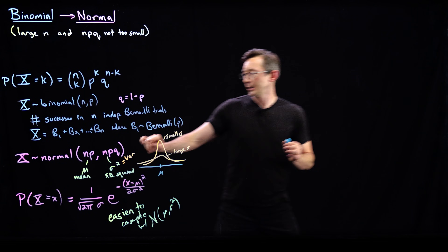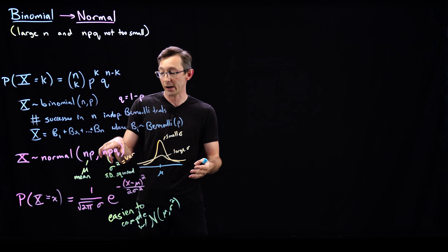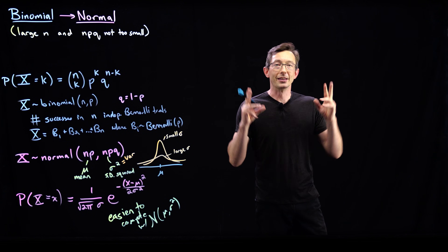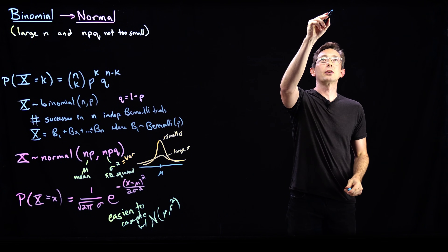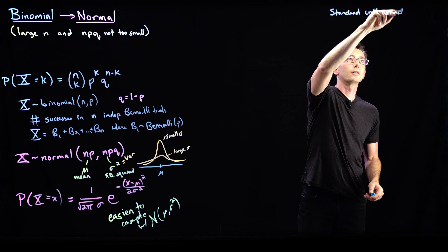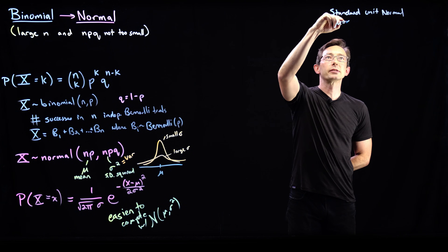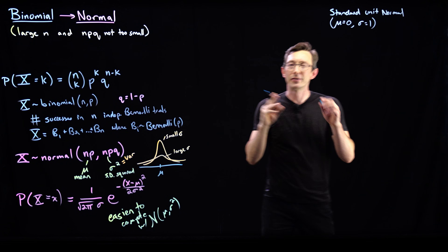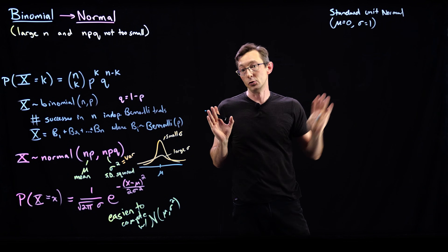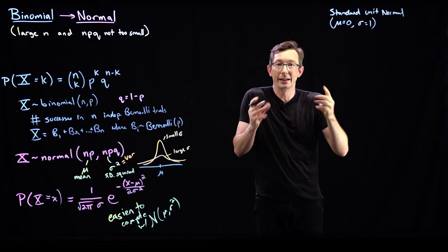This normal distribution is parametrized by two things: the mean mu and the standard deviation squared, sigma squared. I want to show you what this normal distribution looks like in the standard unit normal — we literally call this the standard unit normal, or the Gaussian distribution, the normal distribution. This is where mu equals zero and sigma equals one, the canonical Gaussian, centered around x equals zero.